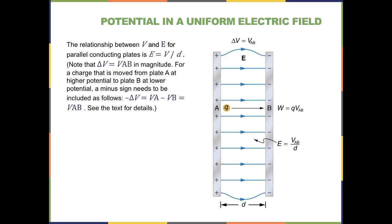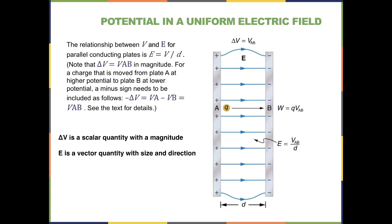So if you have a 5,000-volt potential difference between two plates, the energy of the electrons is 5,000 electron volts. The relationship between V and E for parallel conducting plates: E represents the electrostatic field, V is the potential difference, and D is the distance between the two plates. V is a scalar quantity that does not necessarily have a particular direction, while E is a vector quantity with both size and direction. Delta V equals E times D, and E equals the potential difference divided by the distance between the two plates.